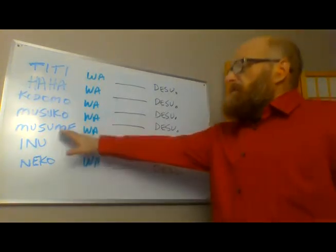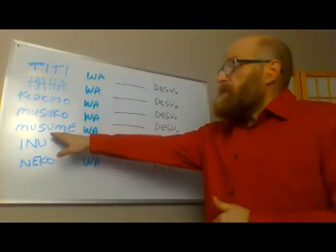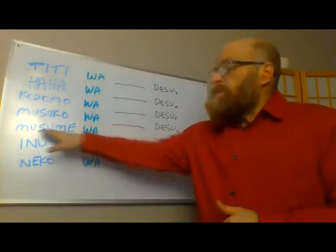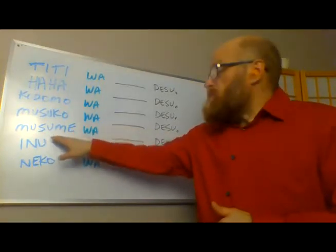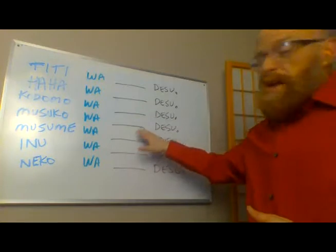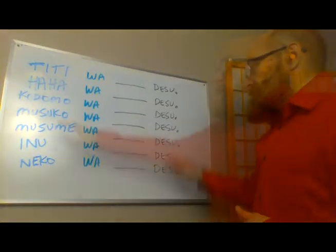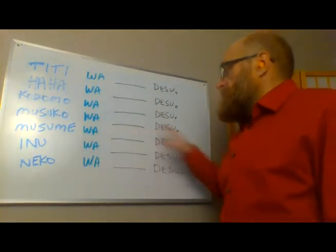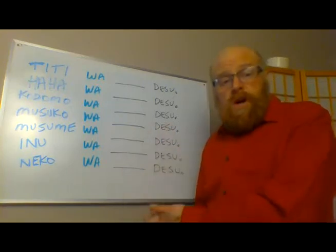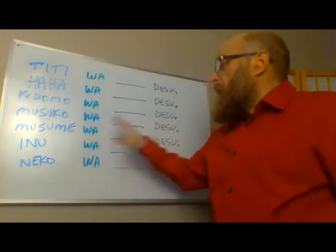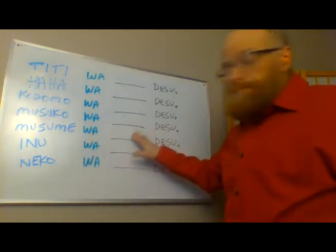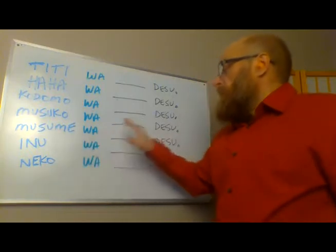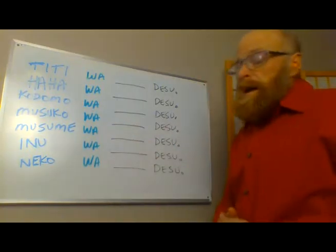Now if you have a daughter — which I do not — it's Musume. Musume wa Kota desu. Now you try — put in your own daughter's name: Musume wa [name] desu.